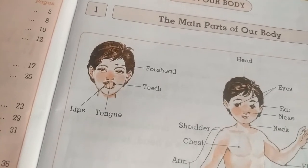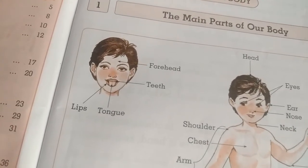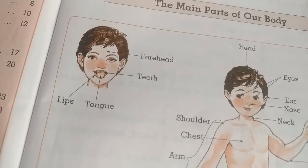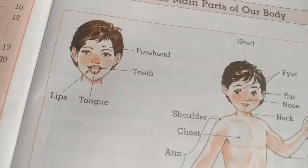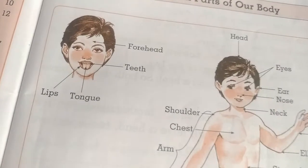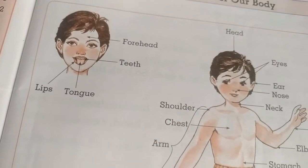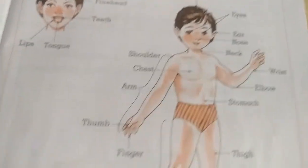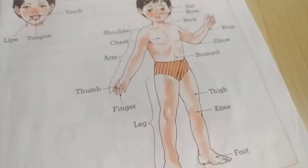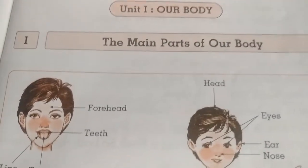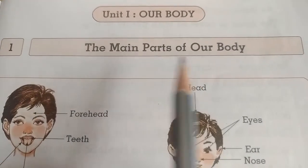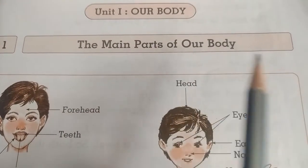Good morning. I am Anita. Today I am going to explain Unit 1, Our Body, of our EBS book. The chapter name is The Main Parts of Our Body. Chapter No. 1: The Main Parts of Our Body.